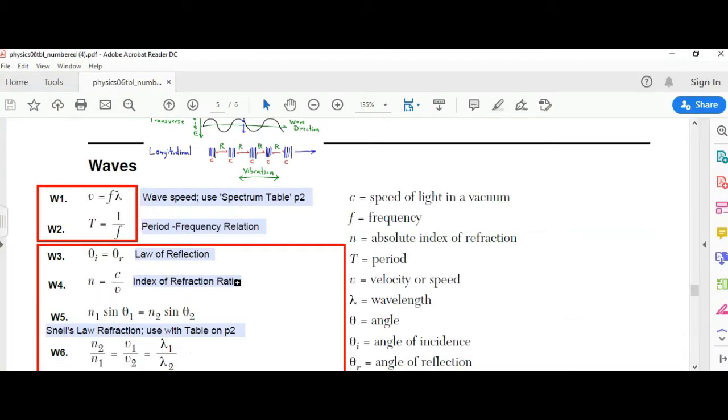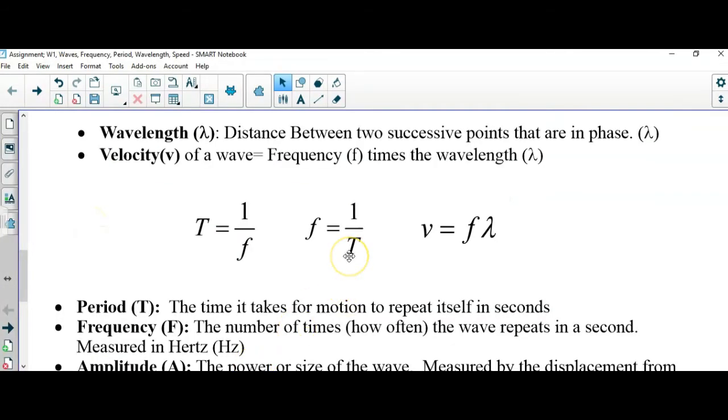We will also be discussing formulas W1 and W2, the velocity and period relations of a wave which are also shown in three various forms: the period, the frequency, and the velocity here.